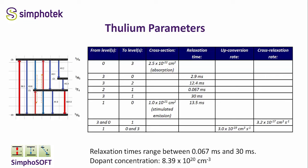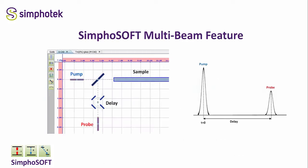The simulation parameters include relaxation times ranging between 0.067 milliseconds and 30 milliseconds, and a dopant concentration a little over 8 times 10 to the 20th. To model amplification, you need two beams: a pump beam and a probe beam. Symphosoft has a multibeam feature where you can have two or more beams operating simultaneously. In this setup, a pump beam goes through a splitter to the sample, and a small probe beam is delayed with respect to the pump and reflected by the beam splitter into the sample.